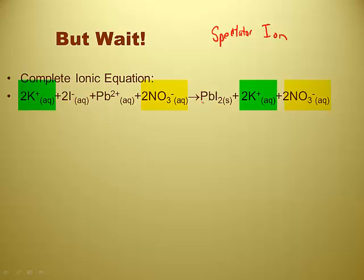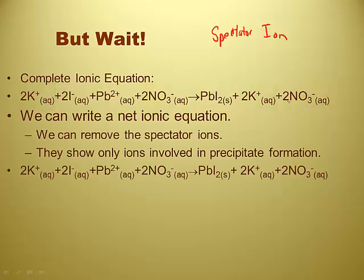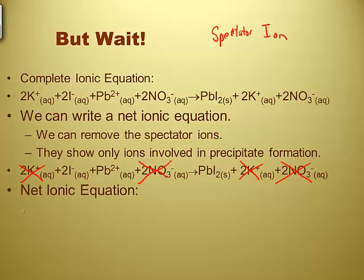Spectator ions are pretty easy to spot — they're the ones that are not in the solid on the product side. If lead and iodide make the product, then potassium and nitrate don't, so they're the spectator ions. We can write a net ionic equation where we remove these spectator ions. The potassium ion appears on both sides, so they cancel — 2 minus 2 is 0. Same for the nitrate ion; we just cross them out. That leaves just the iodide and the lead, which make the solid.